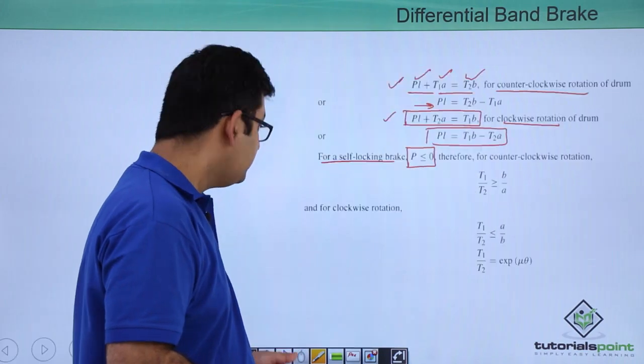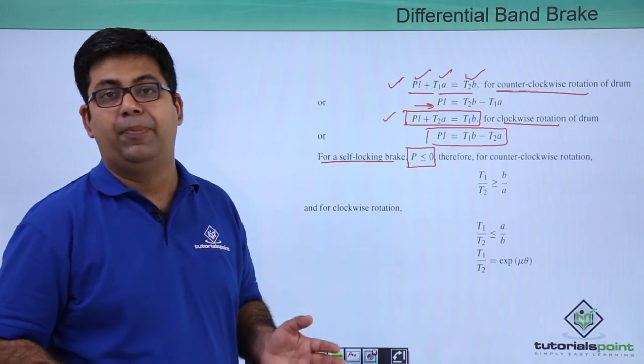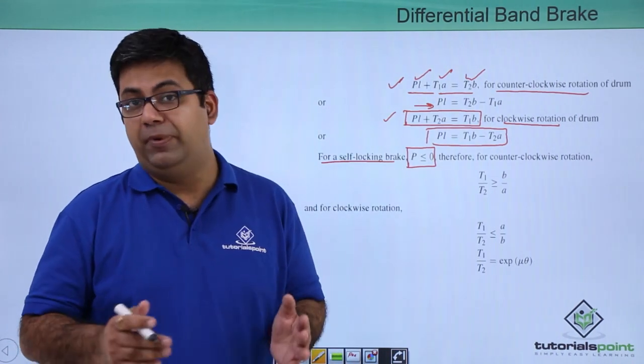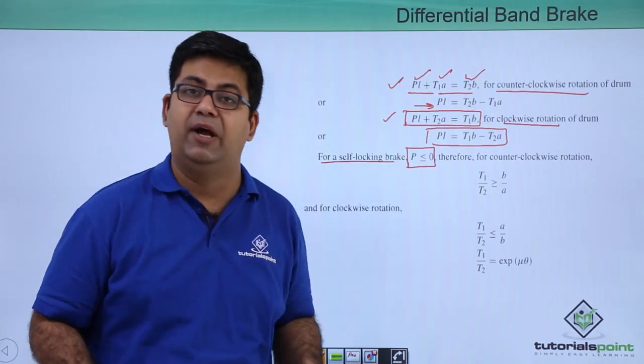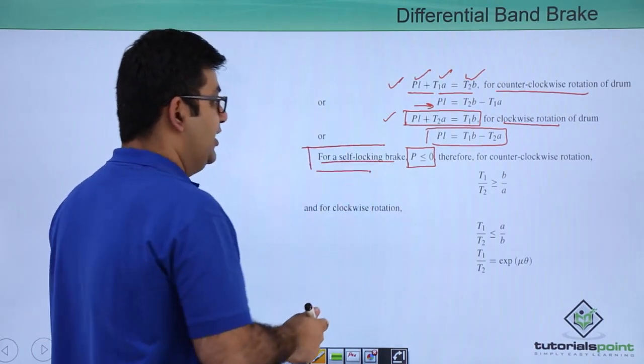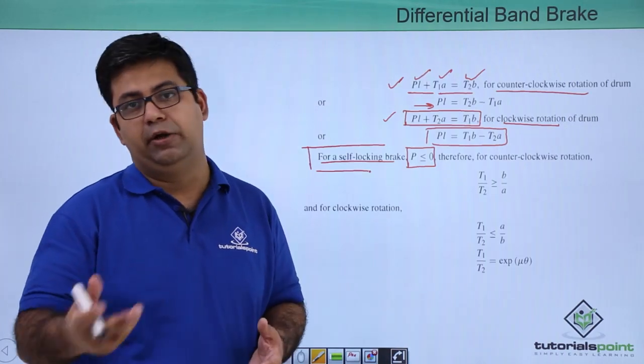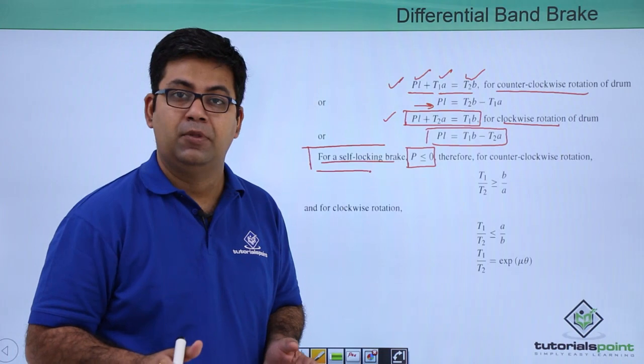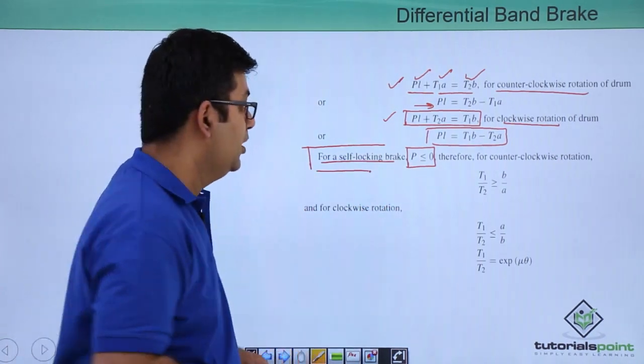Whereas in the case of a self-locking brake, there is no effort required by the operator. The brake is not in control of the operator. There is no load or effort required to operate the brake—that is called a self-locking brake. The band automatically grabs the drum and tries to stop it. This is not desirable. This is the condition when the brake becomes self-locking.